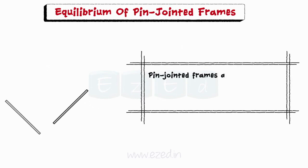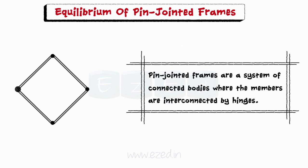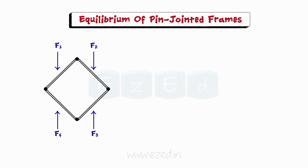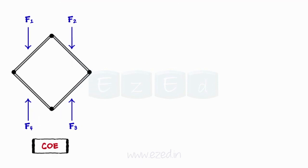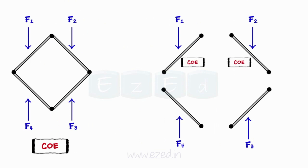We will now learn about equilibrium of pin-jointed frames. Pin-jointed frames are a system of connected bodies where the members are interconnected by hinges or pins. Loads can be applied anywhere on the members of a frame. Since the members are connected by pins, we are required to find out the forces acting on the pins of the loaded frame. These forces can be found by applying COE to the entire frame and also to the individual members after isolating them. When we isolate the hinge or pin, the forces occur in pairs: equal in magnitude, collinear, and opposite in direction.